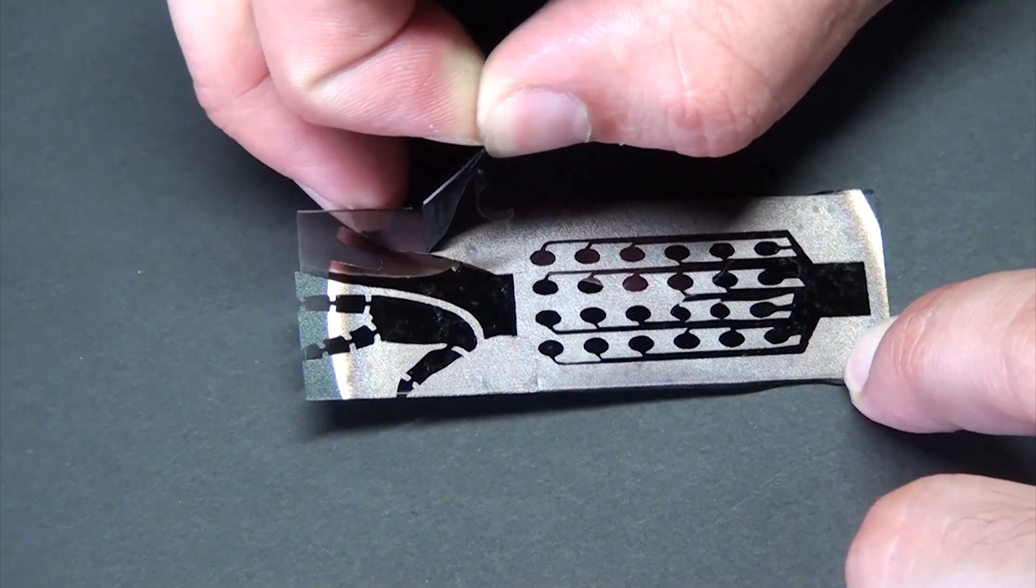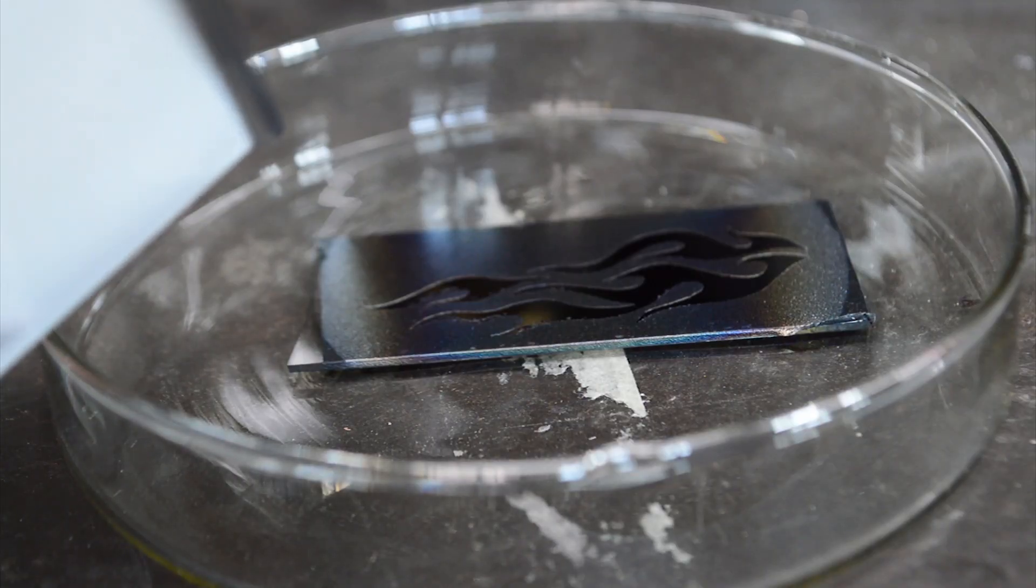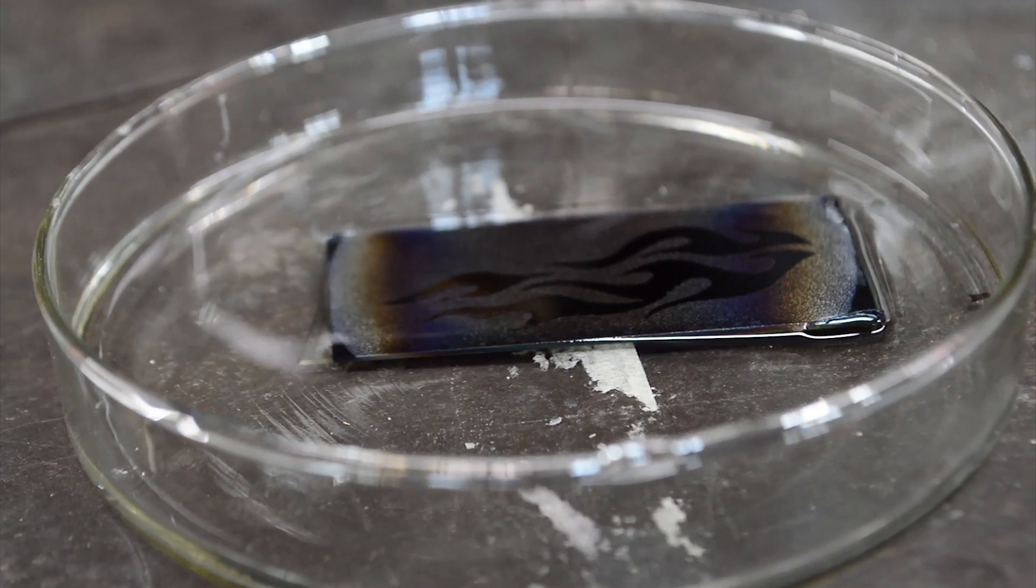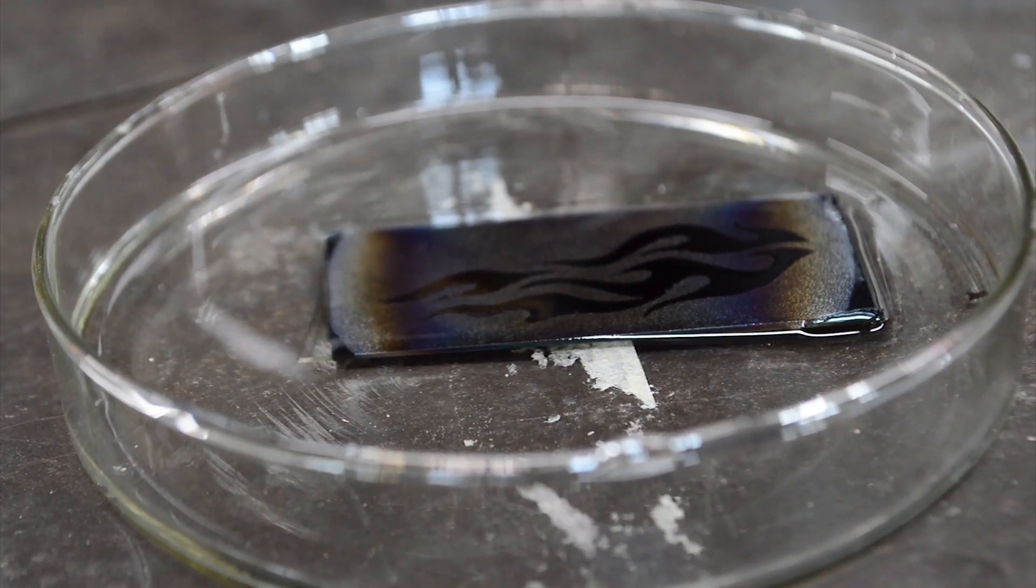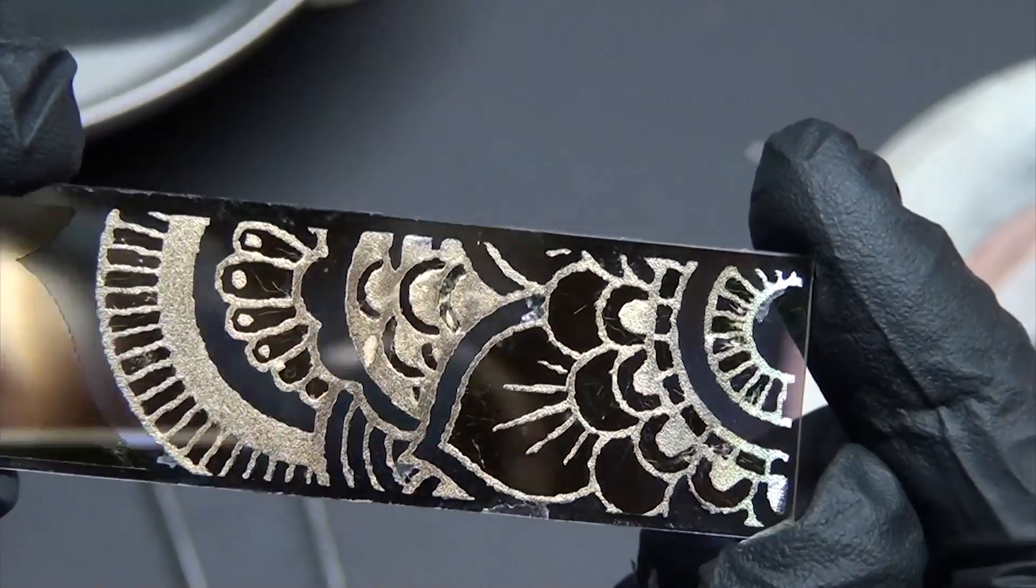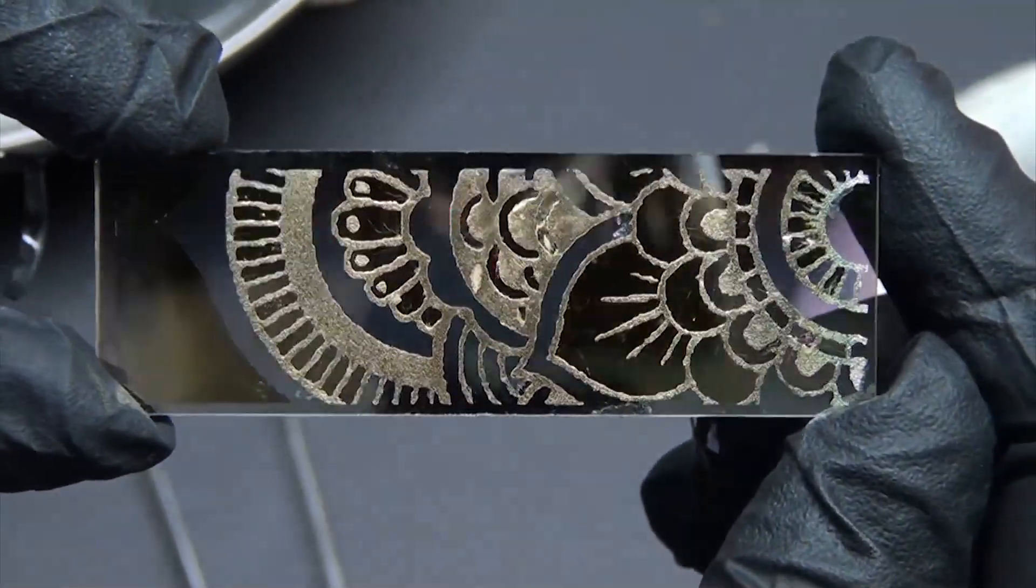After these are coated, we can just pull off the vinyl to reveal our pattern. A quick note, though, is at least with this vinyl, you can't go back and put another layer of it onto the sputtered metal. Even after soaking in acetone, the adhesive just doesn't release from the metal, which ruins the surface. So you need a sequential method, which we'll talk about more in a moment.